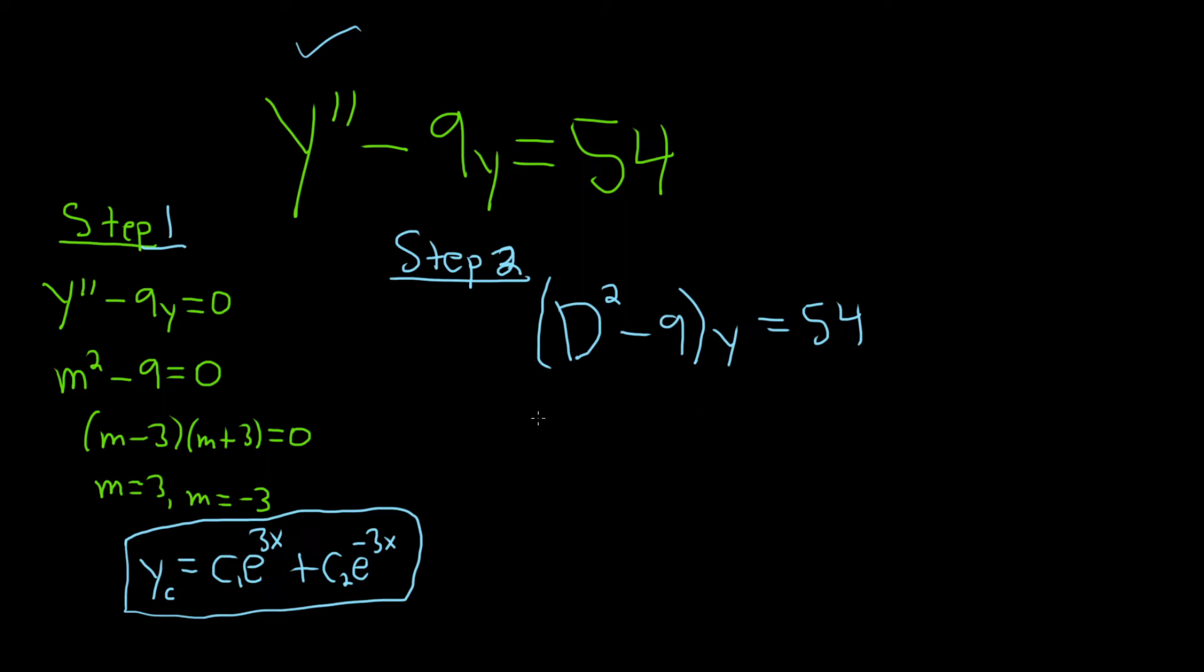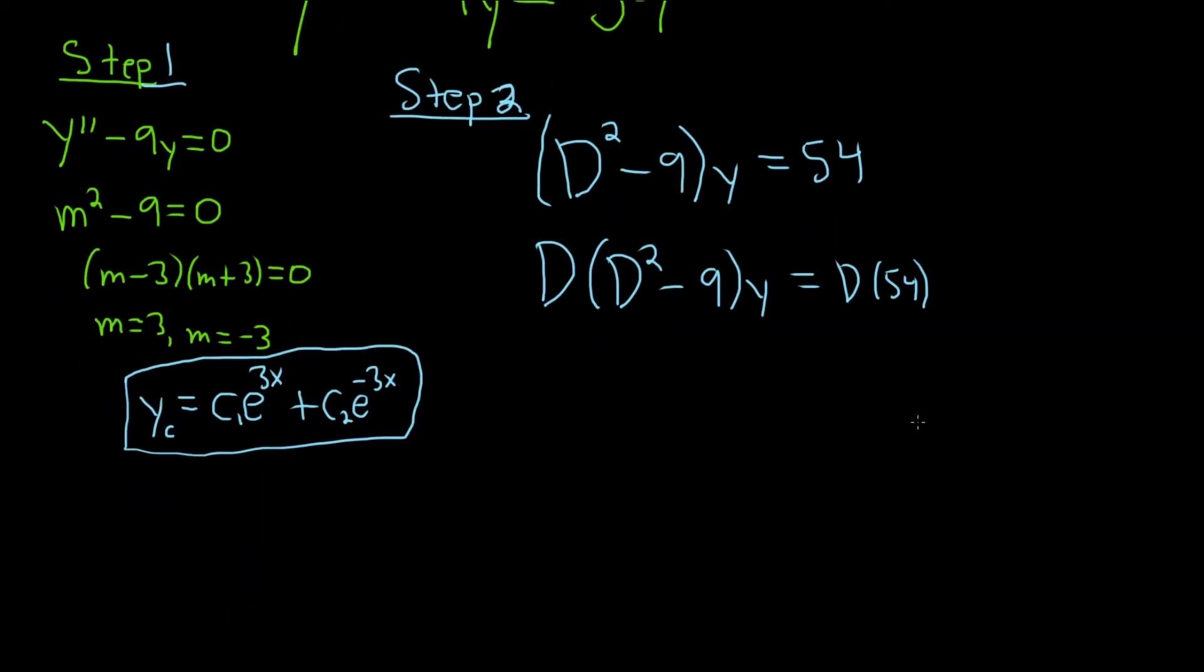So d will annihilate the right-hand side. So what you do is you multiply both sides by d. This is d, and then d squared minus 9. And then here you get d, and then we're applying it to 54. So the derivative of 54 is 0. So here we can distribute this d. So we get d cubed minus 9d. And then we have y. And then here we get 0.